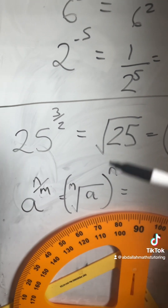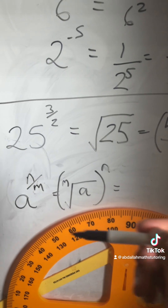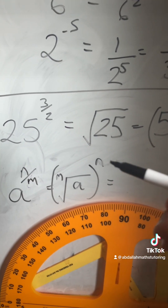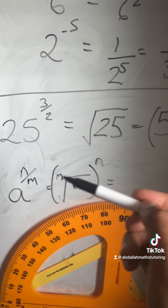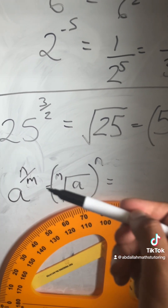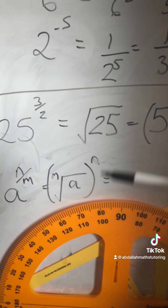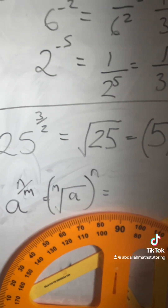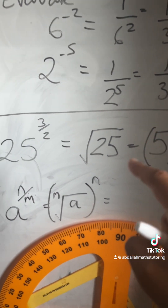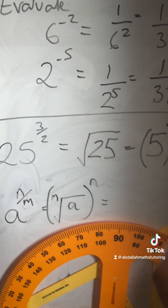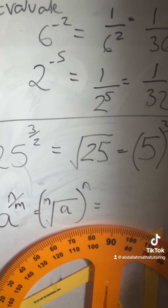So in general, a to the m over n is the nth root of a, all to the power of m. So you work out the nth root of a first, and then raise your answer to the power of m. You're doing the root of the denominator, and once you get an answer, you raise that to the power of the numerator.